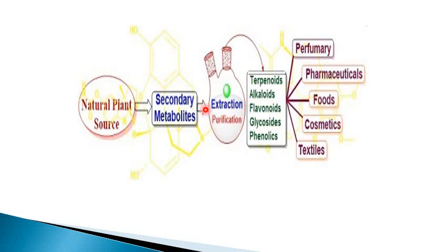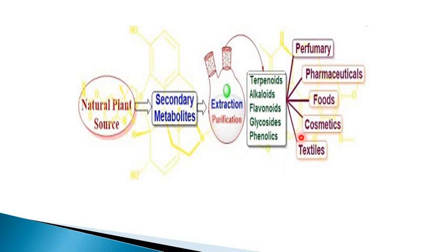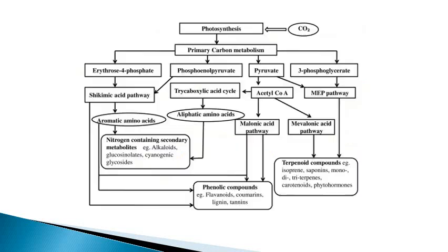These natural plant secondary metabolites can be extracted with the help of bioreactors and fermenters. The secondary metabolites — terpenoids, alkaloids, flavonoids, glycosides, and phenolics — are widely used in the production of perfumery, pharmaceuticals, medicines, drugs, foods, and cosmetics.